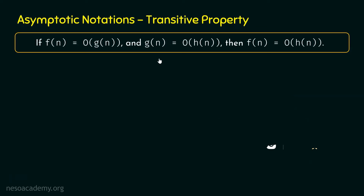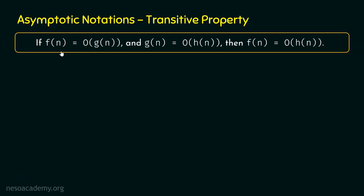This is the transitive property. If F(n) is Big O of G(n) and G(n) is Big O of H(n), then F(n) is Big O of H(n). In other words, if G(n) is asymptotically bigger than F(n) and H(n) is asymptotically bigger than G(n), then it makes sense that H(n) is also asymptotically bigger than F(n). This is the transitive property of Big O notation.